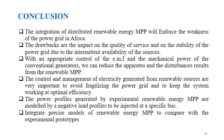Conclusion. The integration of distributed renewable energy micropower plants will address the weakness of the power grid in Africa. It reduces the generated power from conventional generators, hence reducing fuel consumption, minimizing greenhouse emissions, and minimizing all types of waste. The drawbacks are the impact on quality of service and on the stability of the power grid due to the intermittent availability of the sources. With appropriate control of the EMF and mechanical power of the conventional generators, we can reduce the disturbances resulting from the renewable micropower plants. Since disturbances propagate rapidly to connected networks, the control and management of electricity generated from renewable sources are very important to avoid weakening the power grid and to keep the system working at optimal efficiency.